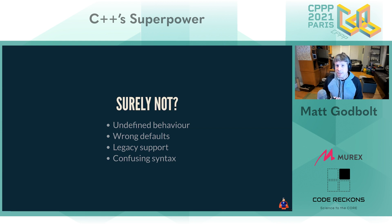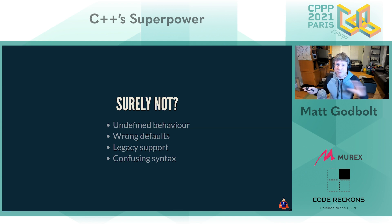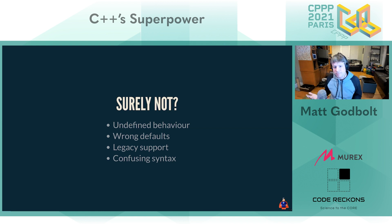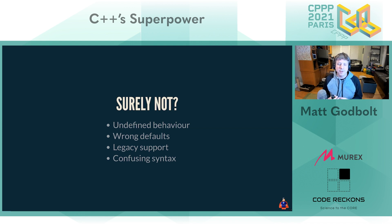C++ has some terrible defaults. For people coming newly into the language, we sometimes have to say 'yeah, that doesn't work the way you would imagine, because it never used to work this way at all, and we had to change it, but we have to be backwards compatible for the other stuff.' Things like implicit constructors — having to put `explicit` everywhere. Why is that not the default? It's a shame, but we can't change it. Wrong defaults are a pain.